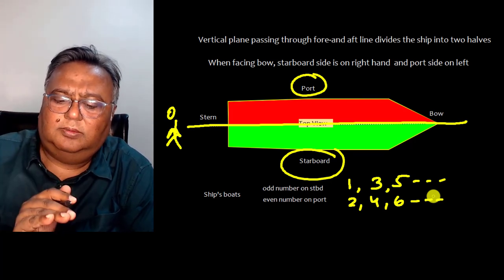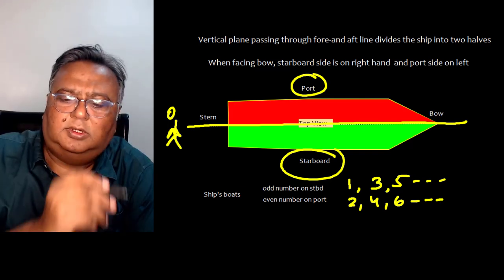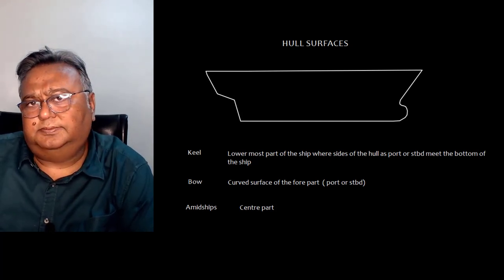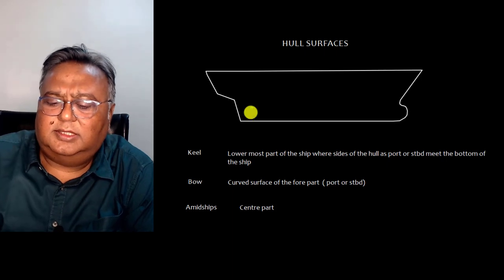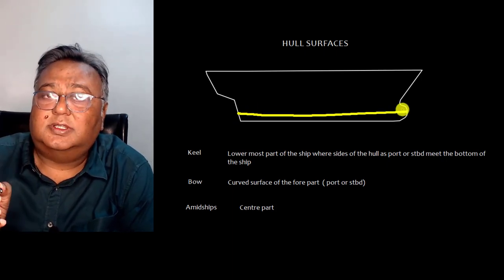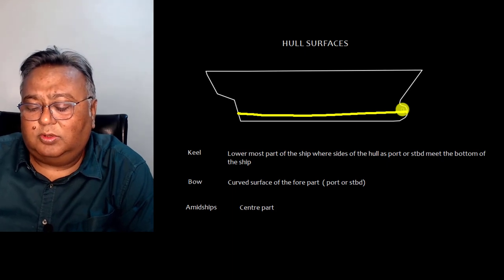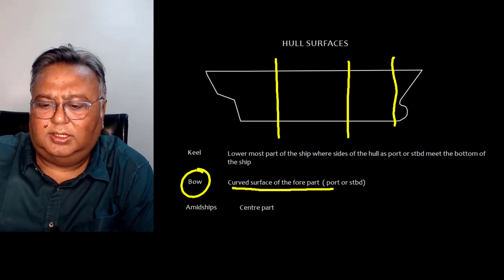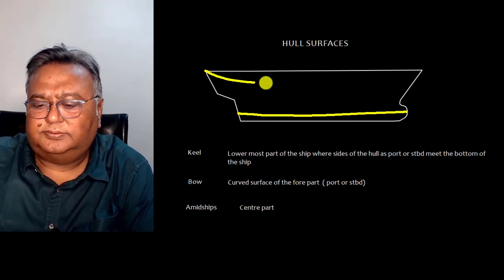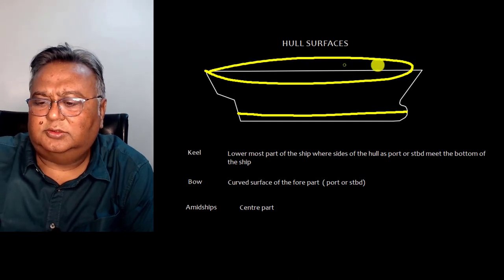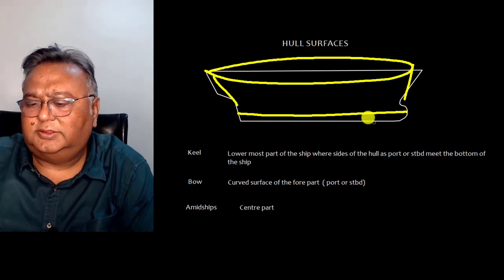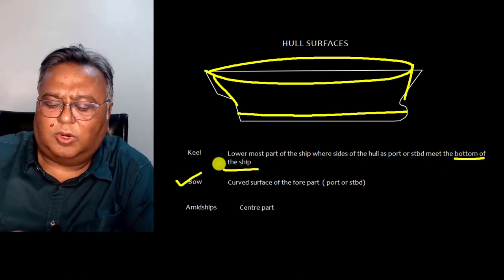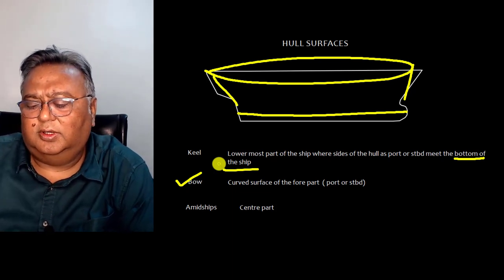Now let's talk about hull surfaces. We start with the keel: the keel is the lowermost part of the ship, also considered its backbone. The sides of the hull on the starboard side and port side meet at the bottom of the ship. The bow is the curved surface of the forward part of the ship, and the midship is the center part of the ship.